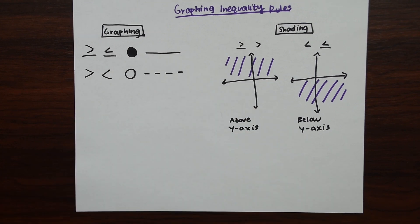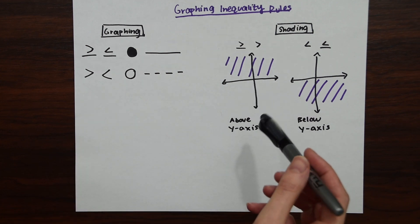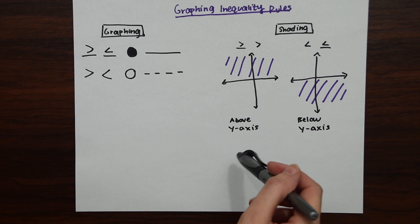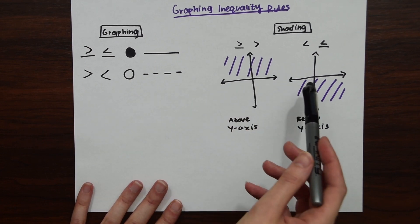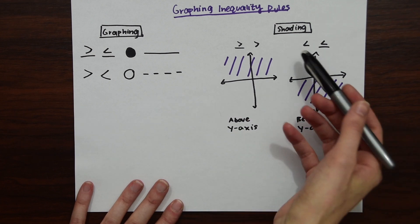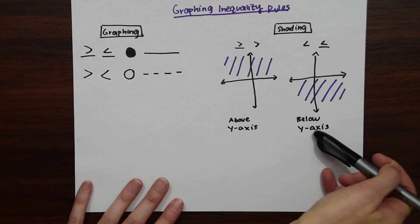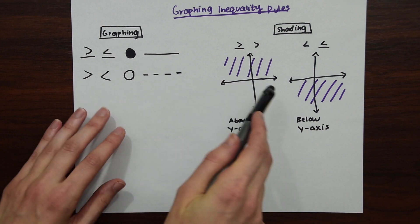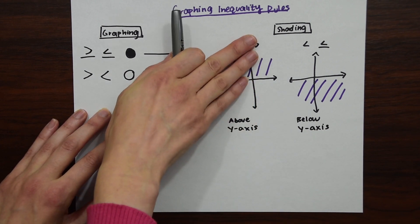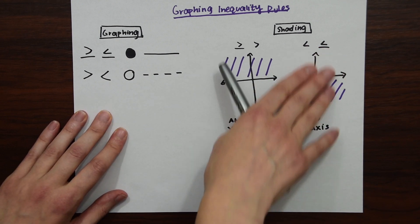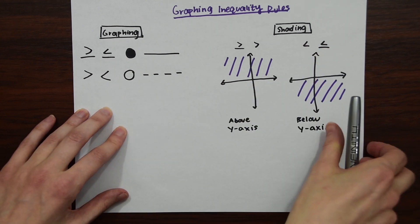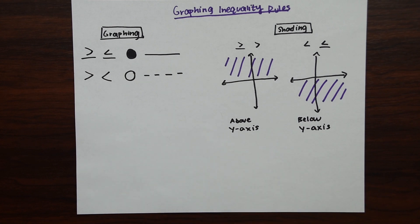When you're graphing inequalities there's also going to be shading — we shade where the solution is. If it's greater than or equal to, or greater than, we shade above the line; if it's less than or equal to, or less than, we shade below. Greater than means we're using all those positive y-values, and less than means we're going down or below.